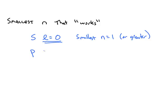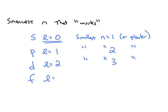For a P orbital, we know the quantum number L is one, and the smallest n that works is now two — anything greater than two will also work. For a D orbital, L is two, and the smallest n that works is three or greater. And for an F orbital, L is three, and the smallest n value that works is four.